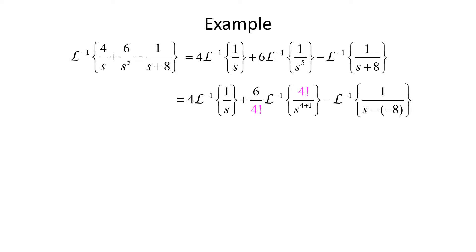For 1/s⁵, s⁵ is the same as s^(4+1), so our n value is 4. We put 4! in the numerator and divide by 4! on the outside. For the last term, we rewrite 1/(s+8) as 1/(s−(−8)). Now all three terms match our formulas. Evaluating: 4·(1) + (6/24)·t⁴ − e^(−8t).